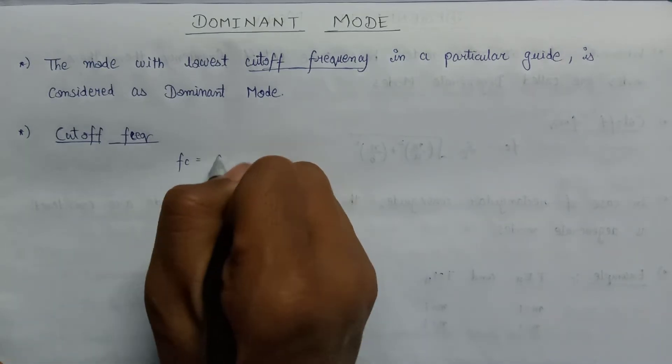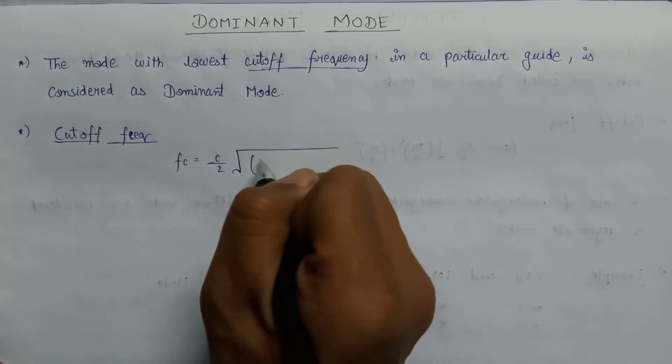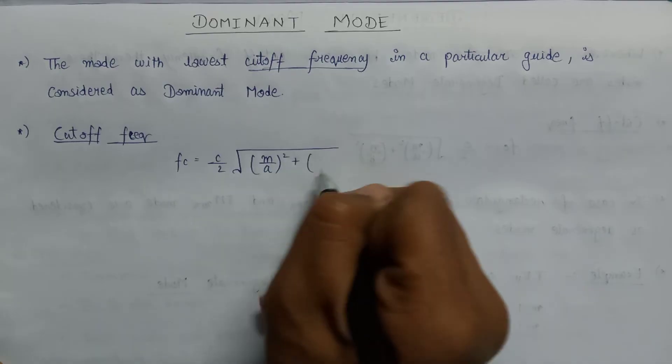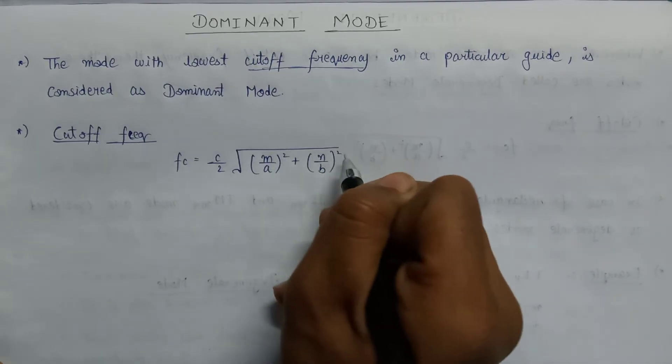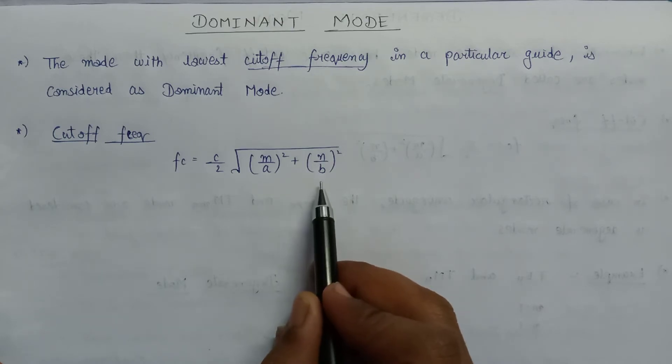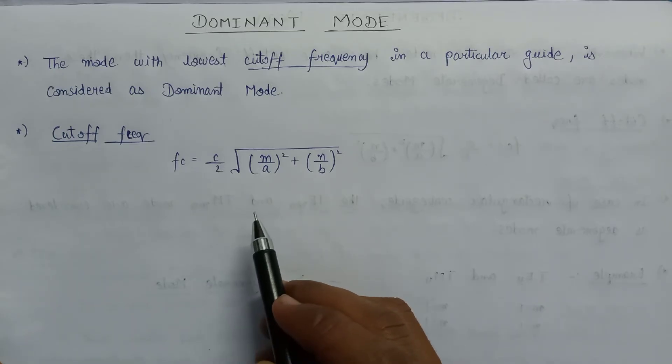fc which is equal to c over 2 under the root m over a whole square plus n over b whole square, where a and b are the width and breadth of the rectangular waveguide, and c is the speed of light through which the wave propagates in the vacuum.